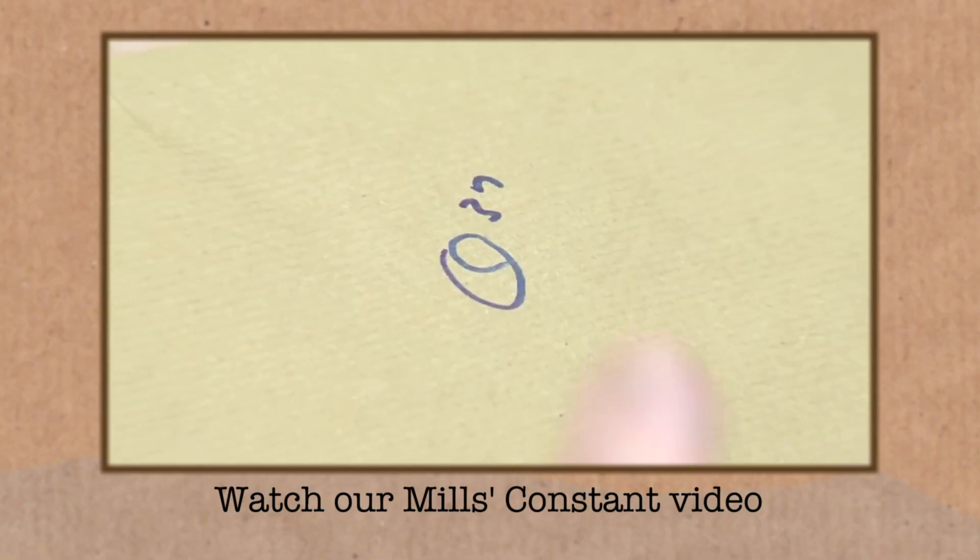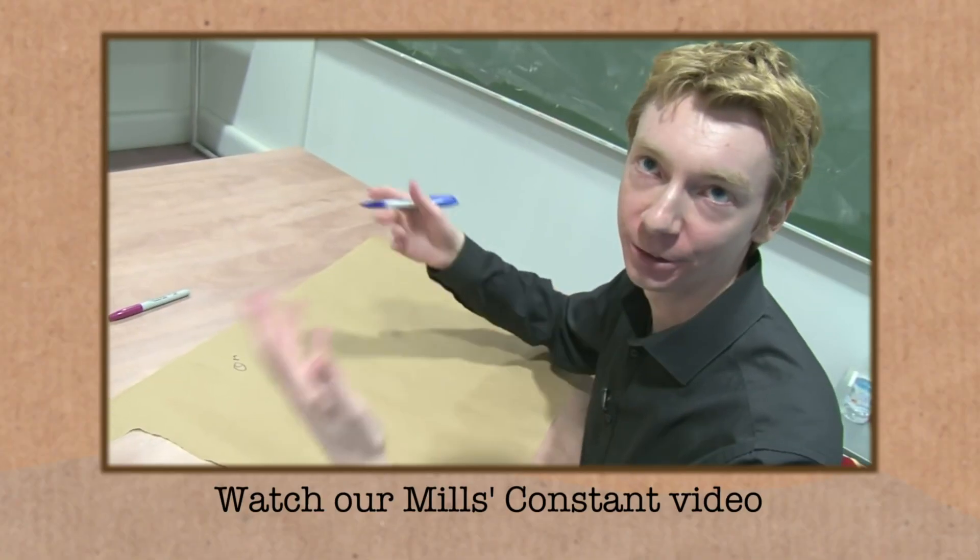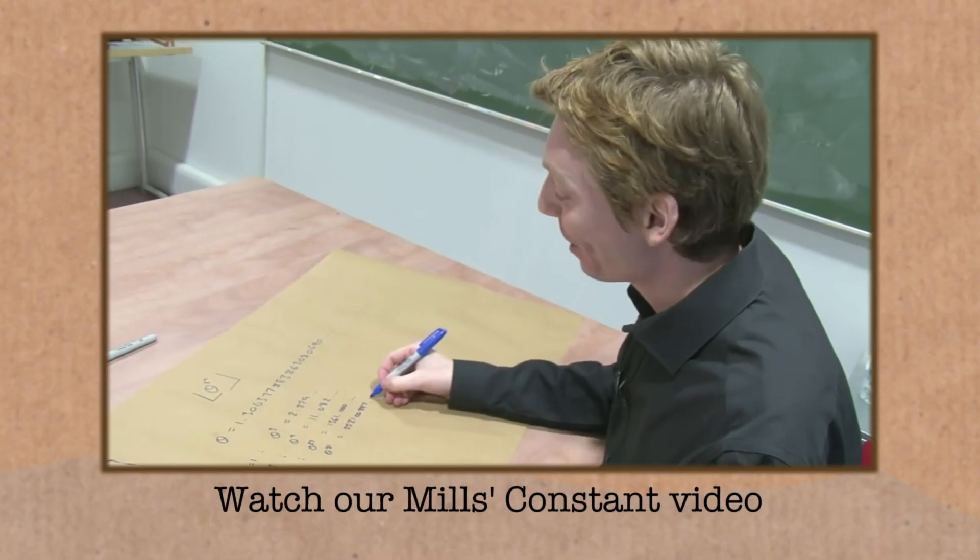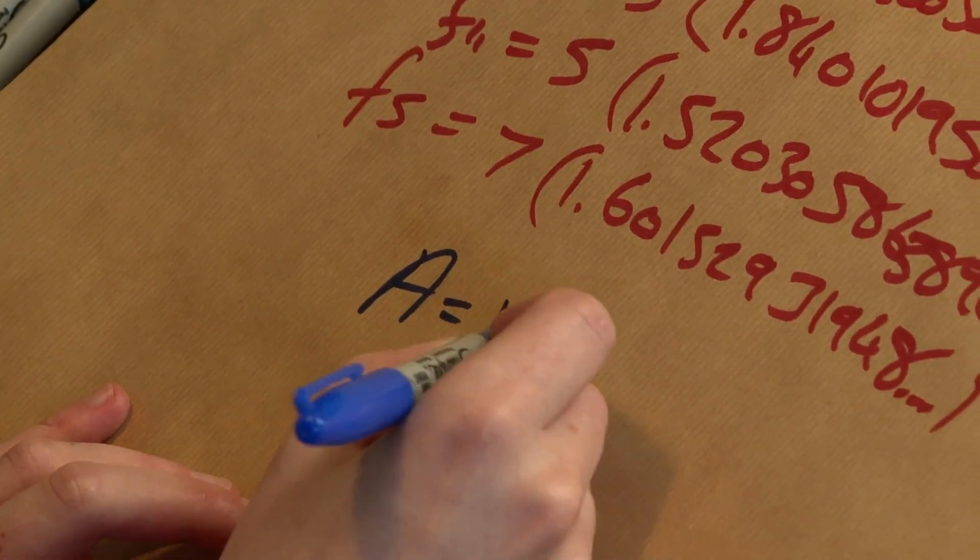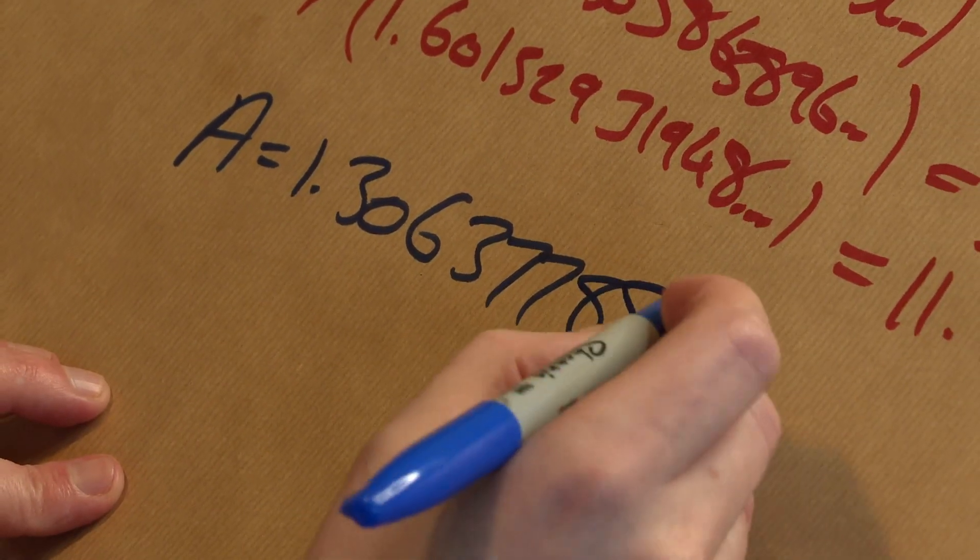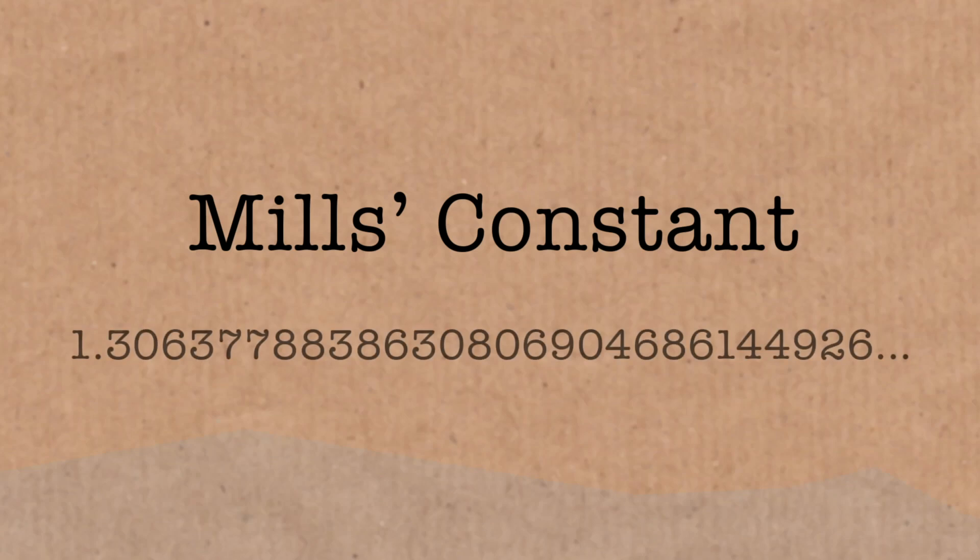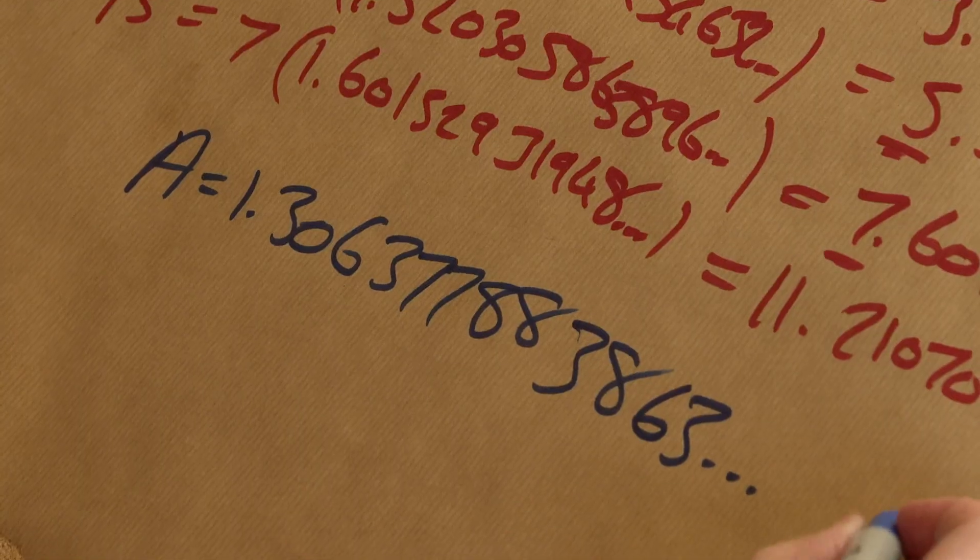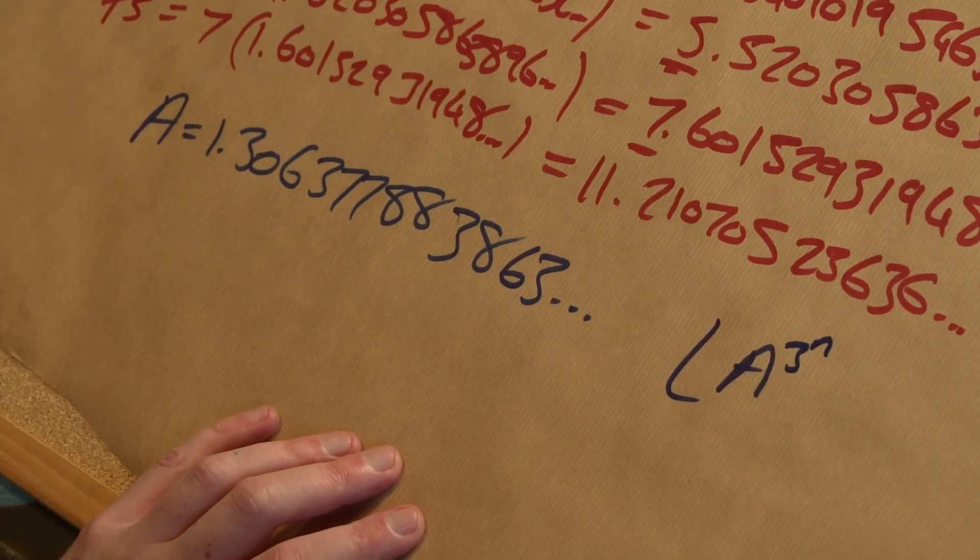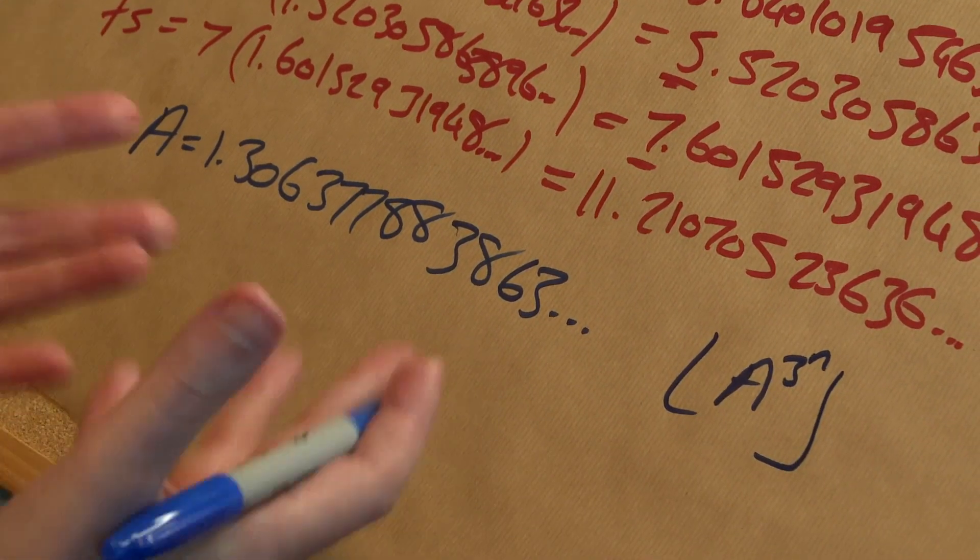I have talked about constants that generate prime numbers before, and I did a video about something called Mill's constant. And so Mill's constant was a constant and a formula in the same kind of way, which was this. I'm going to call it A, and it was 1.306377883863 and stuff. So this was Mill's constant, and the formula was, kind of like this was rounding down, it was Mill's constant to the power three to the power n, and then you would round that down. It gave you a sequences of primes.